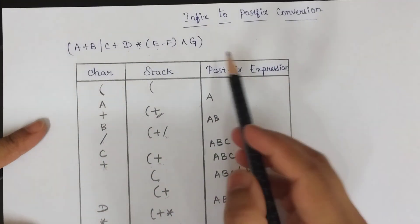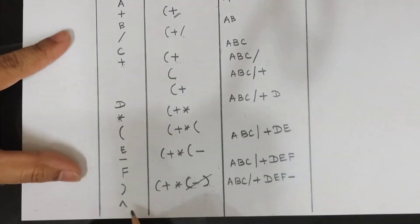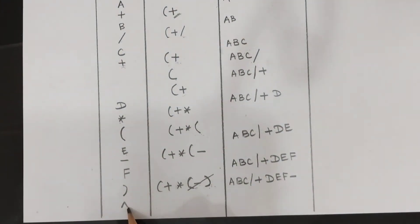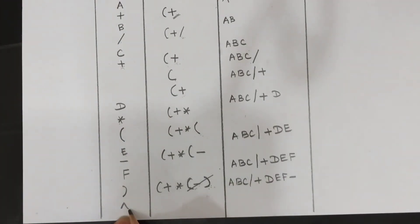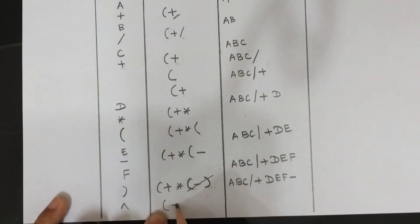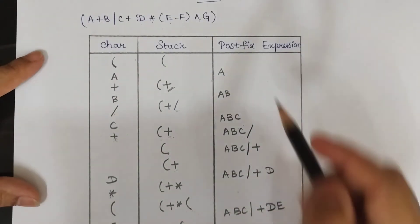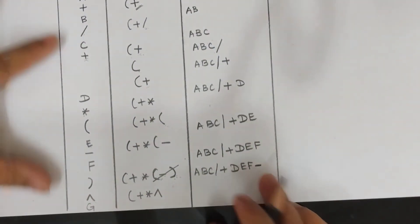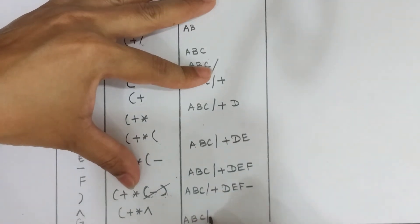The next character is the exponent operator. Exponent has the highest precedence among all arithmetic operators, so push it directly into the stack. The next character is 'G', which is an operand — add it to the postfix expression.